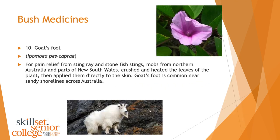Finally, goat's foot — it's the name of this plant, not an actual goat's foot. It was used for pain relief from stingray and stonefish stings. Mobs from northern Australia and parts of New South Wales crushed and heated the leaves, then applied them directly to the skin. Goat's foot is common near sandy shorelines across Australia, which is amazing — the plant that people needed when stung by ocean animals just happens to grow on the shorelines where they needed it. Okay guys, that's me done — I hope you went well with the questions. If you have any questions, catch me on the Zoom chat during class tomorrow.